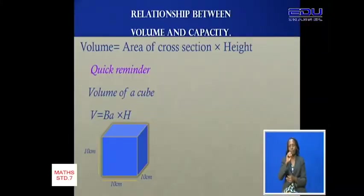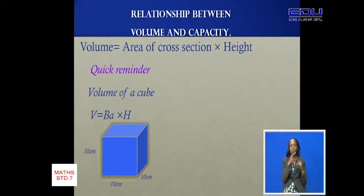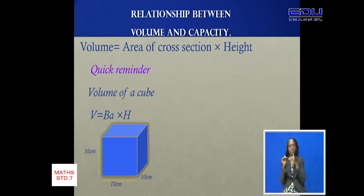To start us off we need to look at the volume of cubes, the volume of cuboids and the volume of cylinders. As you may have learned, volume is equal to the area of the cross section multiplied by the height. That is just a quick reminder that volume is equal to cross section area multiplied by the height.